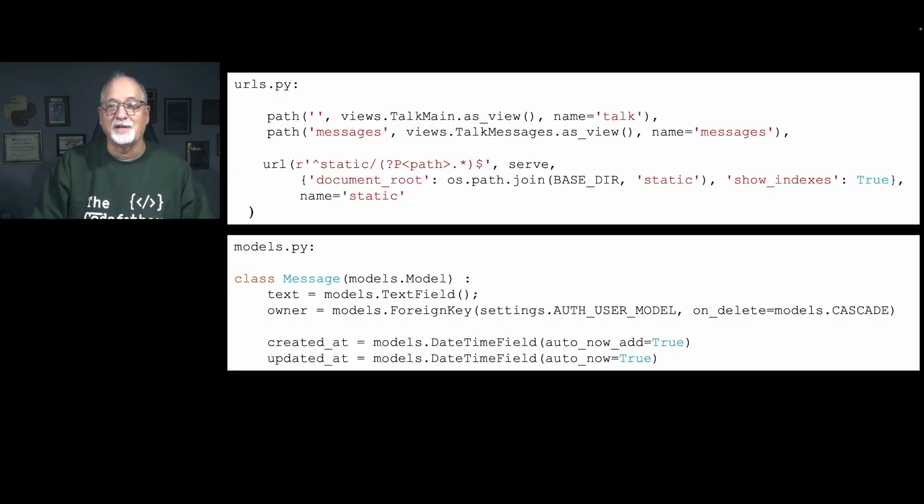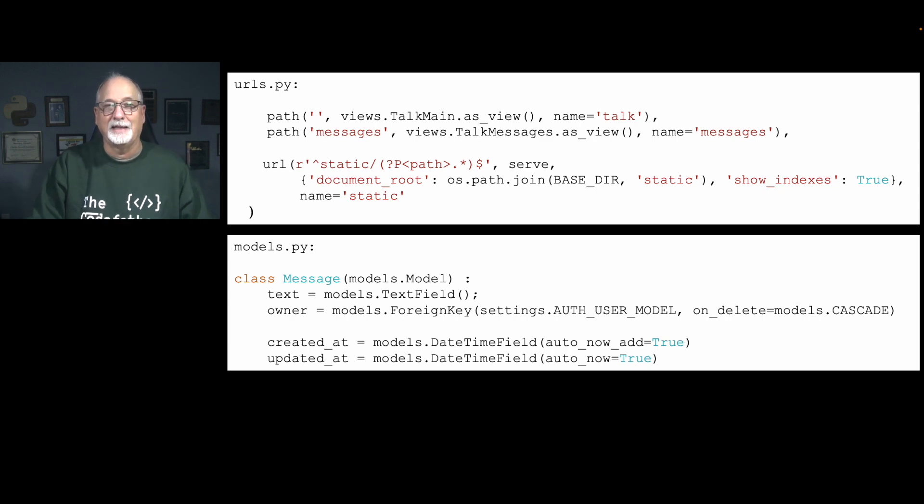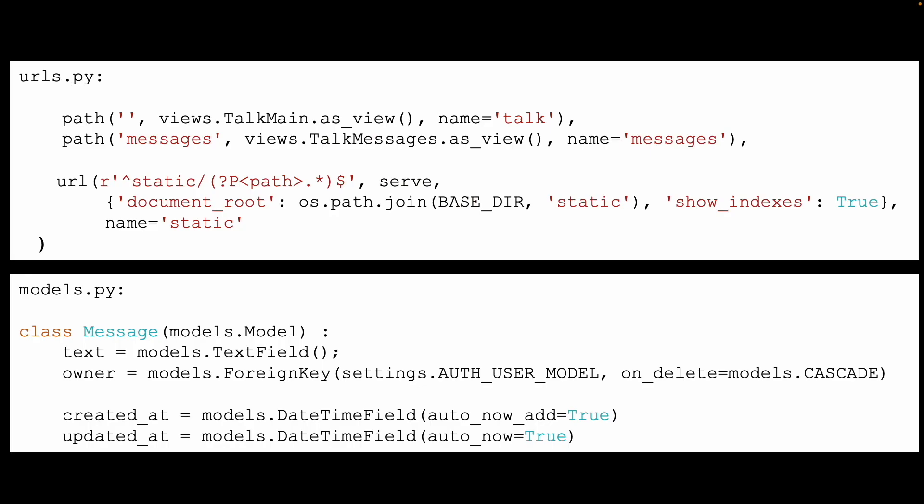If we take a look at urls.py — and I have a nice walkthrough if you want to see this version — I have the main view called 'talk', and then 'messages' is the JSON view.